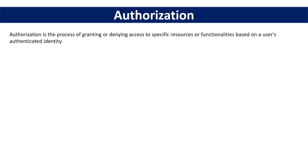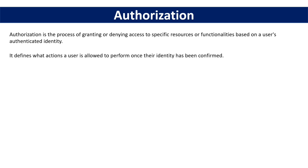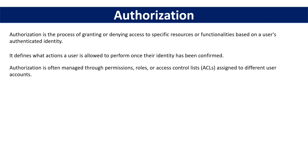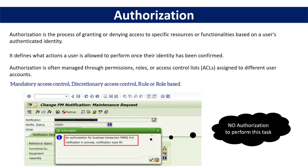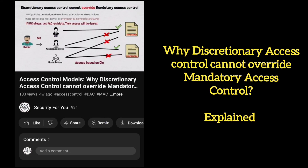Finally, we have authorization. Authorization is the process of granting or denying access to specific resources or functionalities based on a user's authenticated identity. It defines what a user is allowed to perform once their identity has been confirmed, and it is often managed through permissions, roles, or access control lists assigned to different user accounts. There are different types of access control, including mandatory access control, discretionary, rule-based, and role-based access control.